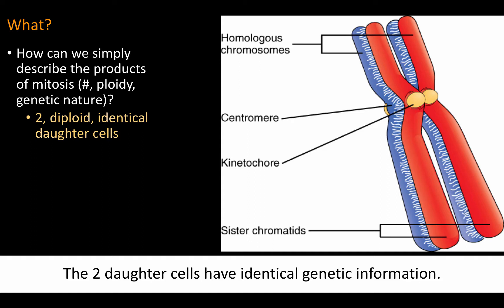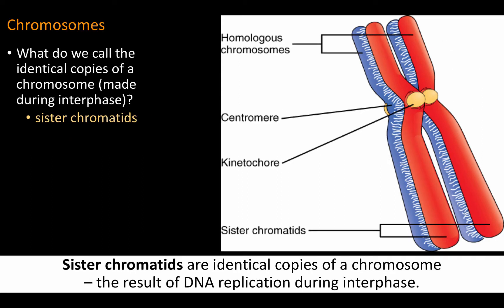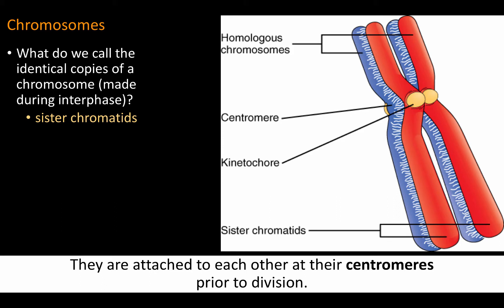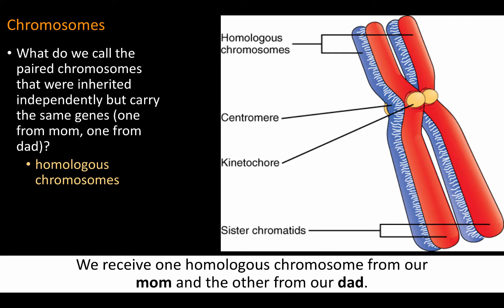The two daughter cells have identical genetic information. We know this because each daughter cell receives one sister chromatid. Sister chromatids are identical copies of a chromosome, the result of DNA replication during interphase. They are attached to each other at their centromeres prior to division. Don't confuse sister chromatids with homologous chromosomes, the two members of a chromosome pair. We receive one homologous chromosome from our mom and the other from our dad.